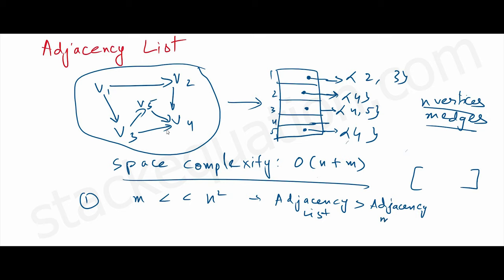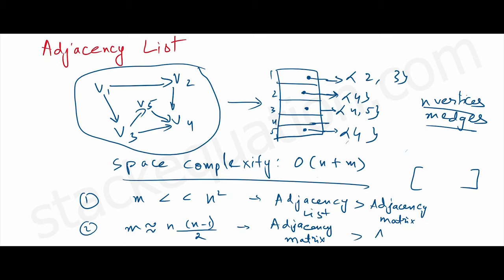When the number of edges is almost equivalent to n times (n minus one) by two, where n is the number of vertices, then adjacency matrix is a better choice than adjacency list.